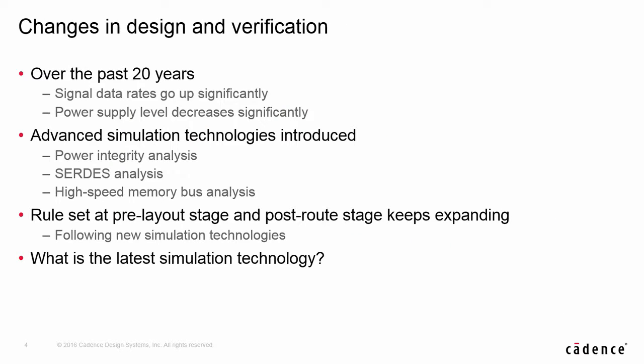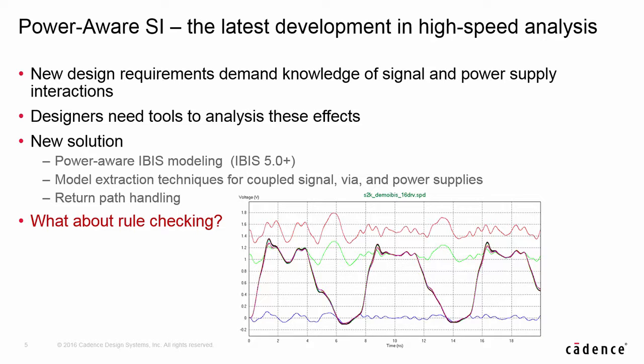The constraint-driven flow first contained only rules to prevent problems with SI and EMI. Over the past 20 years, as technology advances, signal rates go up and power supply levels go down, and new simulation methodologies have been introduced like PI analysis, 3DS analysis, and high-speed memory bus simulations. More rules are introduced, for example decoupling capacitor placement rules for PI application and differential signal rules for serial link designs. With smaller noise margins on signal and power supply, designs today require simulation results of signal and power iterations. The new simulation technology is supported by power-aware IBIS modeling, signal power extraction, and return path handling.